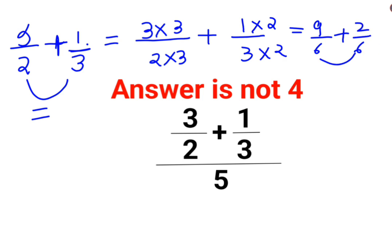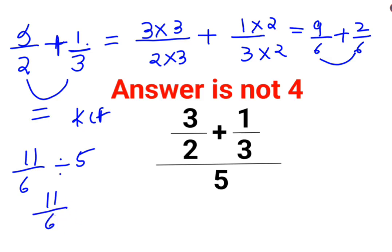Your numerator has simplified to 11 upon 6, divided by 5. Now when you have a fraction involved in division, you follow the rules of KCF: K stands for keeping the first number as it is, C stands for changing the division sign to multiplication, and F stands for flipping — taking the reciprocal of 5, which is 1 upon 5. So the answer is 11 upon 30.